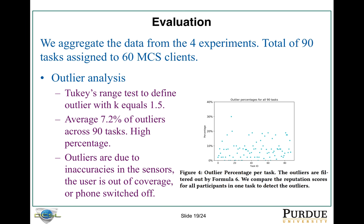To evaluate, we aggregated data from the four experiments. We found 90 tasks generated from 16 mobile crowdsensing clients. The first analysis is outlier analysis. We used the Tukey range test to define outliers. We found that across the 90 tasks, there are 7.2% of outliers in each task on average — that's really high. In some tasks, the outlier percentage rate goes up to 30%, which is very significant. So when designing a mobile crowdsensing campaign, you should definitely consider outliers.